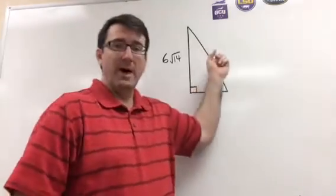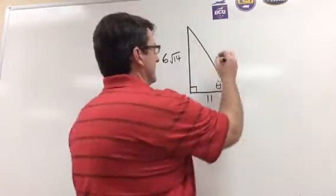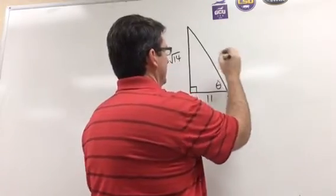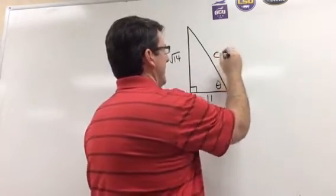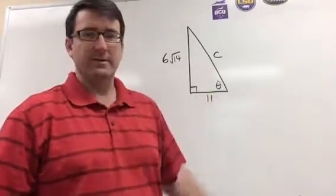We need the hypotenuse divided by the adjacent side, but we don't know the hypotenuse, so we're going to have to figure that out first. Let's call it C, since it's the hypotenuse, because in our Pythagorean theorem we usually call the hypotenuse C.